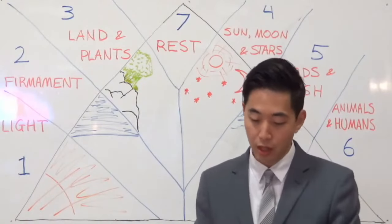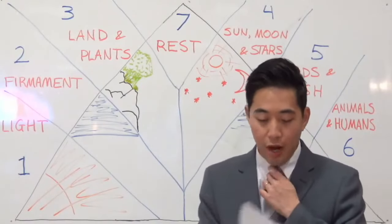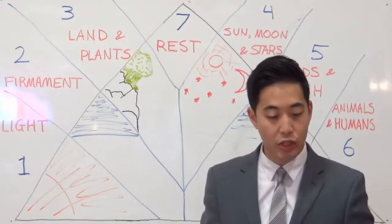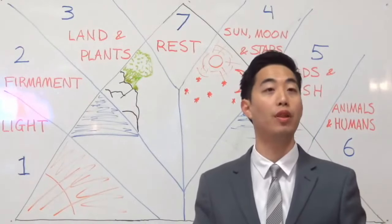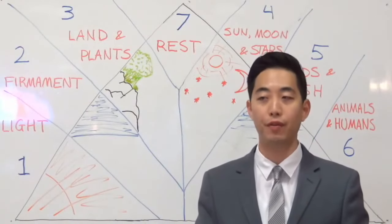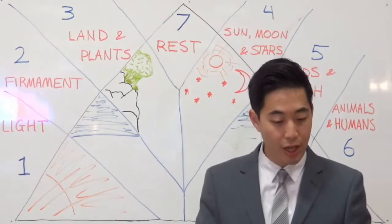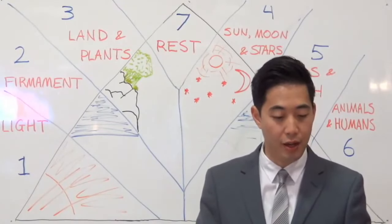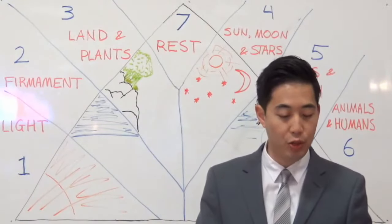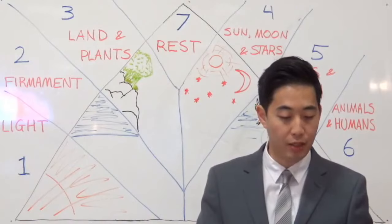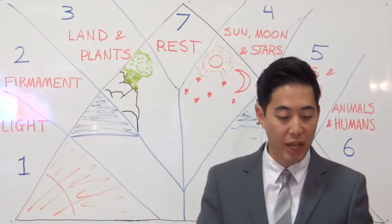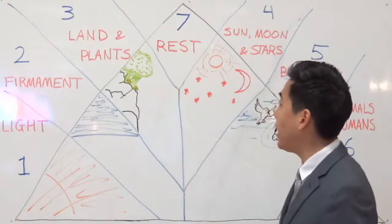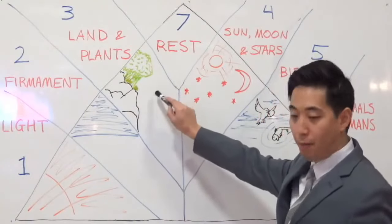Genesis chapter 1, verse 9. The Bible says, 'And God said, let the waters under the heaven be gathered together unto one place, and let the dry land appear.' So the meaning of that — God is speaking, and we're on day number 3 now.